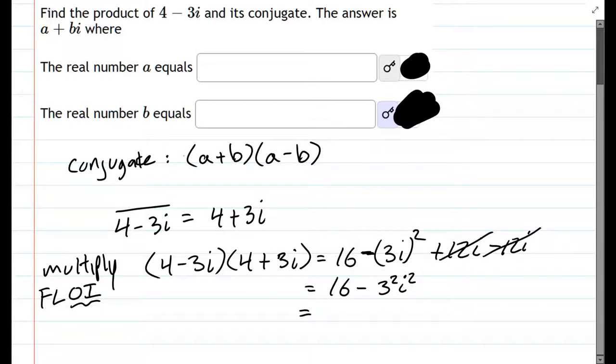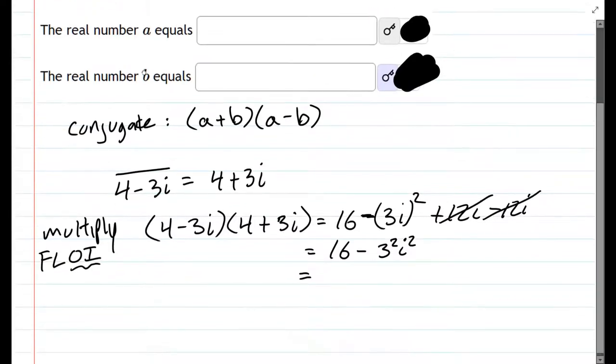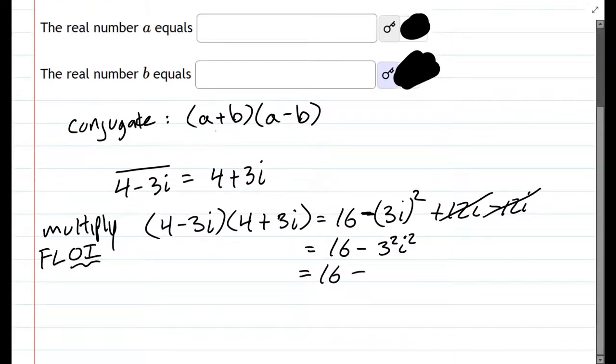So there is no imaginary term here. What is i squared? Remember, i squared is negative 1. So 16 minus 3 squared, which is 9, times negative 1. So you actually add these. Minus a negative is a positive. And 16 plus 9 is 25.